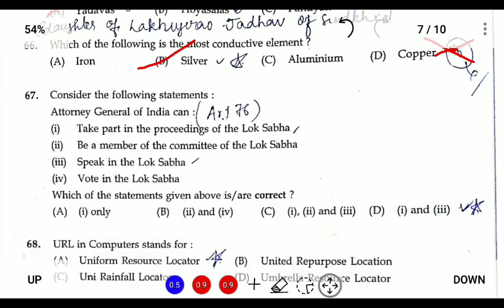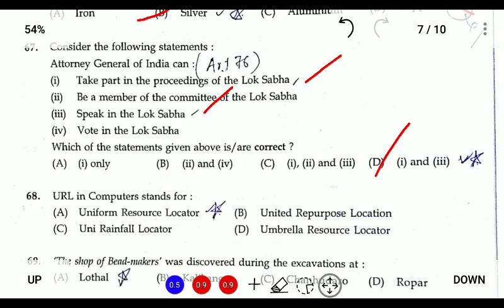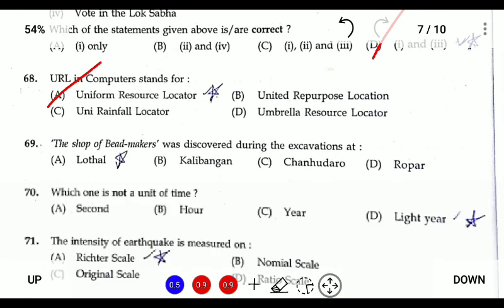Question sixty-five: according to the Attorney General under Article 76, he can take part in proceedings in both Houses and can speak in the Lok Sabha. The answer is D — options one and three. He cannot vote and cannot be a member of any parliamentary committee since he is not a member of Parliament. Question sixty-six: URL stands for Uniform Resource Locator.